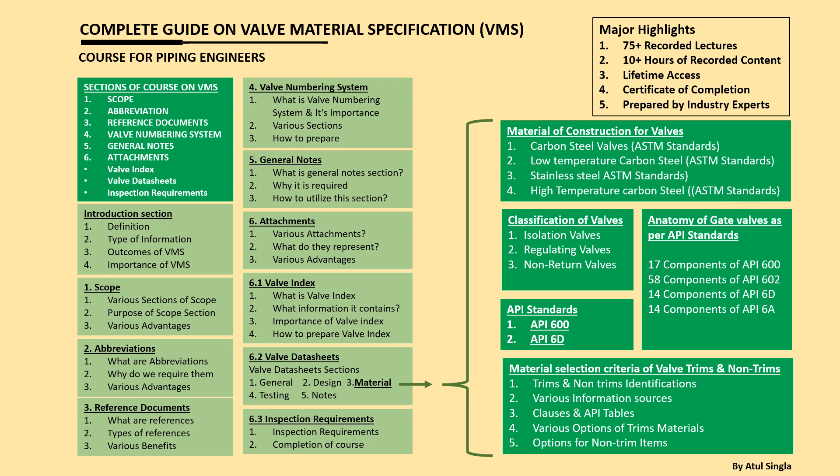Then we'll talk about the anatomy of gate valves. We'll cover four API standards: API 600, API 602, API 6D, and API 6A. We'll look at each and every component, take examples of each component, see how it is associated with the valve, and discuss the various components' applications, advantages, and disadvantages. Going through these four API standards will reveal what kind of components are there.